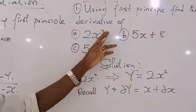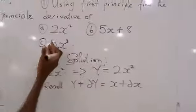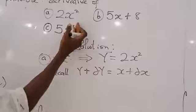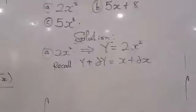Now, B, we have 5X plus 8 and C, 5X cubed. Solution for the first one.